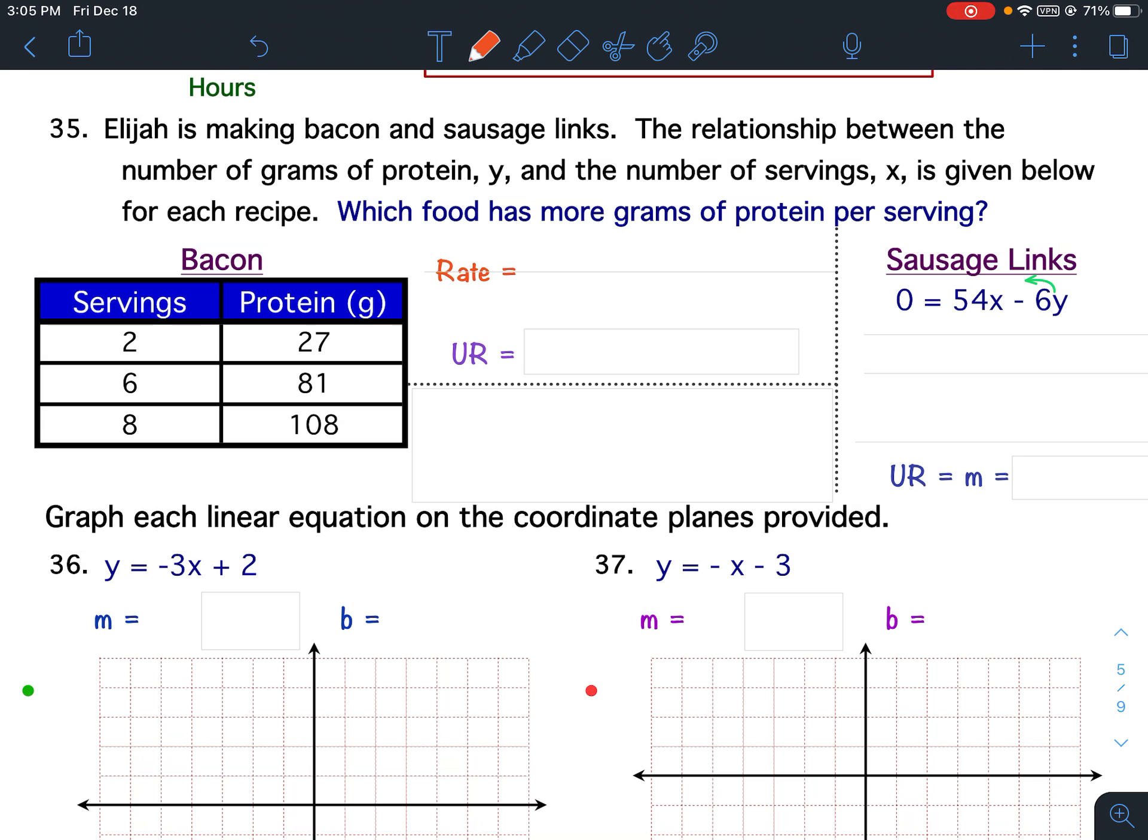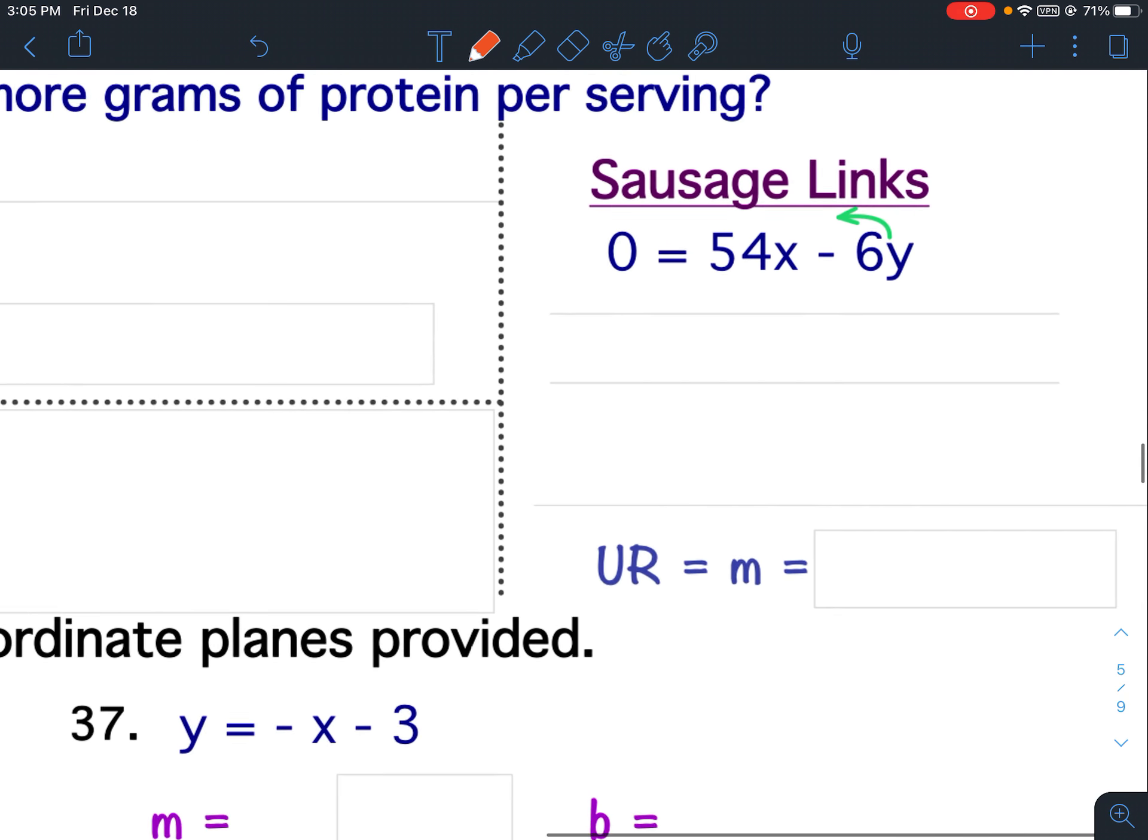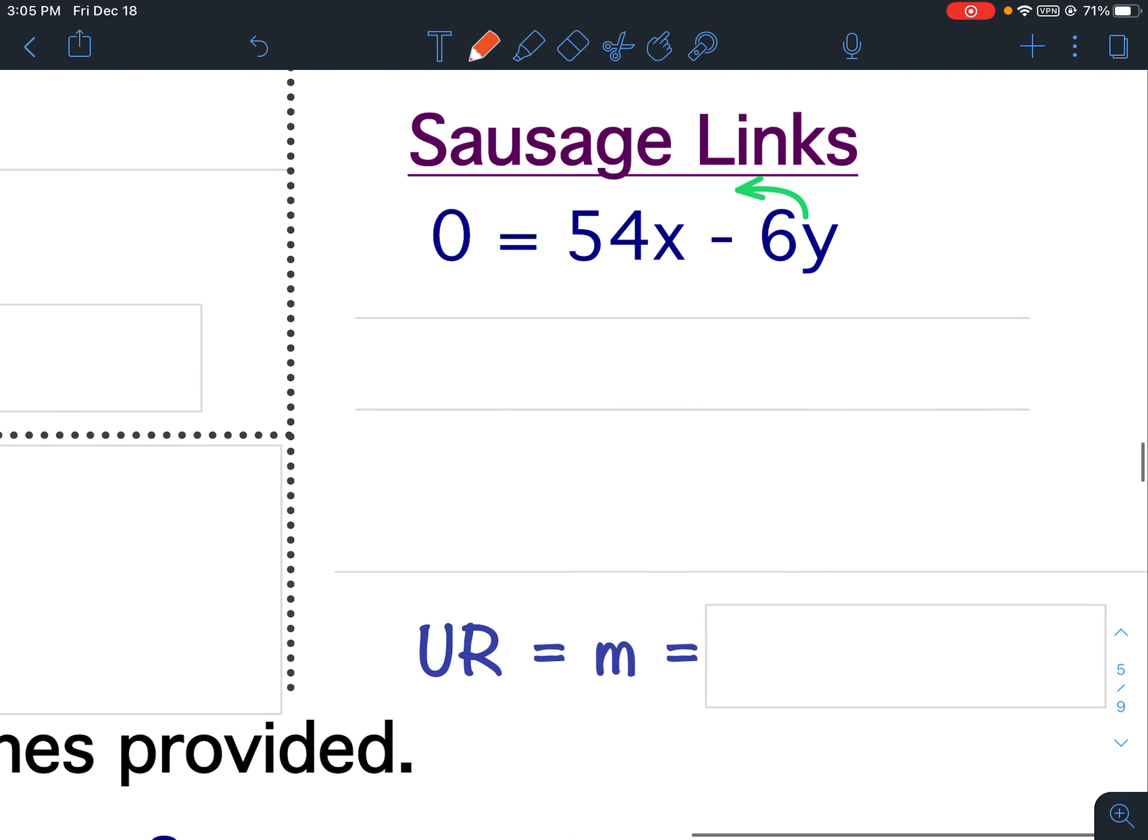We want to figure out who has more grams of protein per serving. Let's start with the sausage links. When you are given an equation, you need to put it in slope-intercept form.